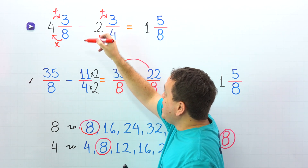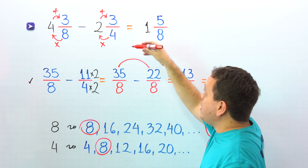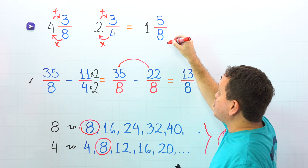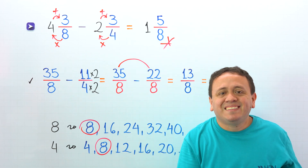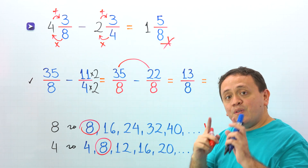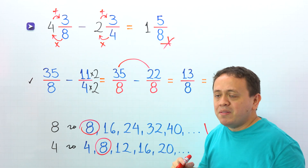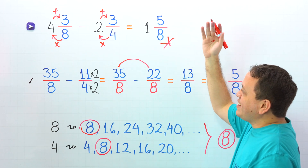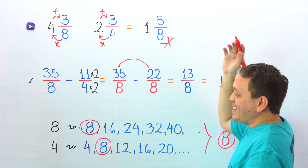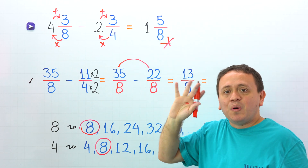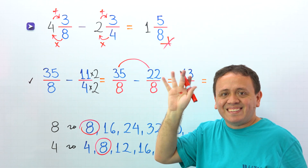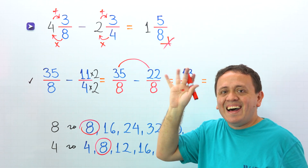Therefore, 4 and 3 eighths minus 2 and 3 fourths gives us 1 and 5 eighths. That's all for today. If you want to learn more about mixed numbers, check out this playlist. And here you have another video. Have a good one and see you next lesson!